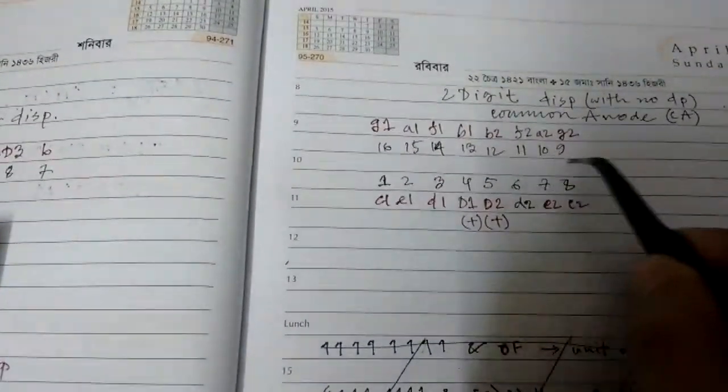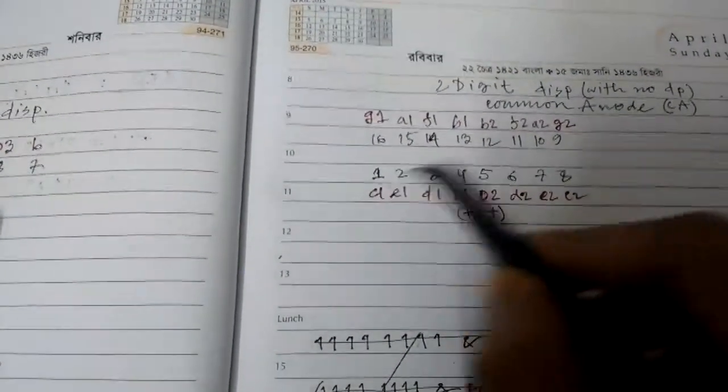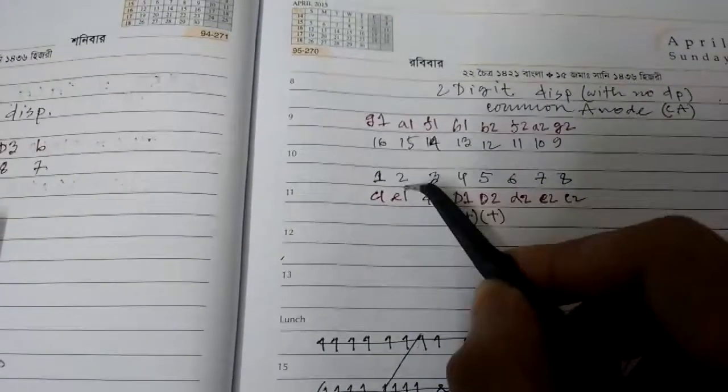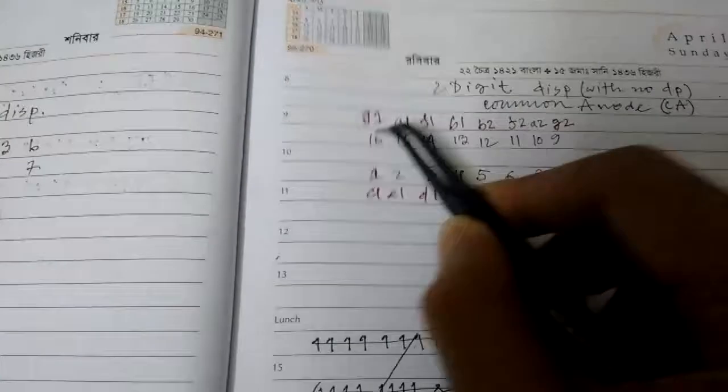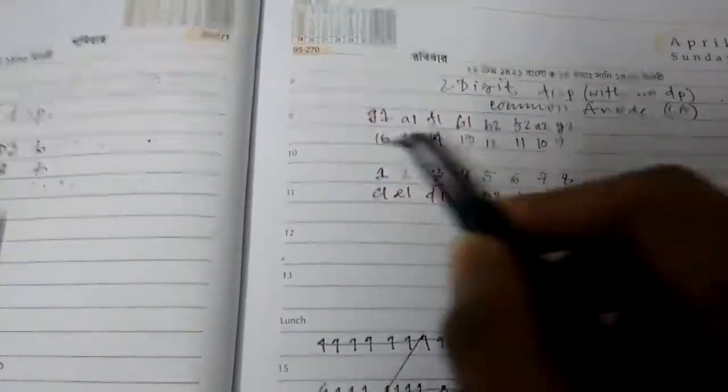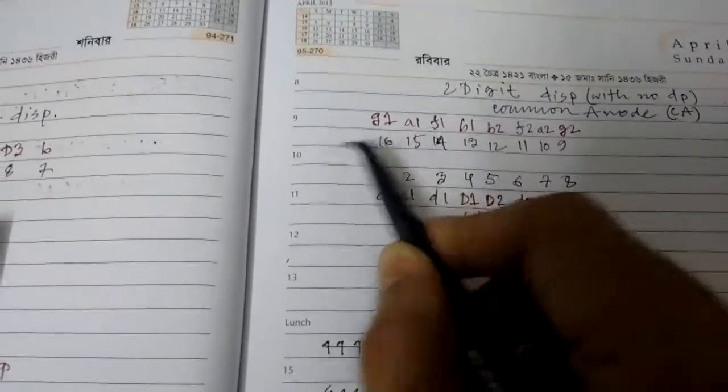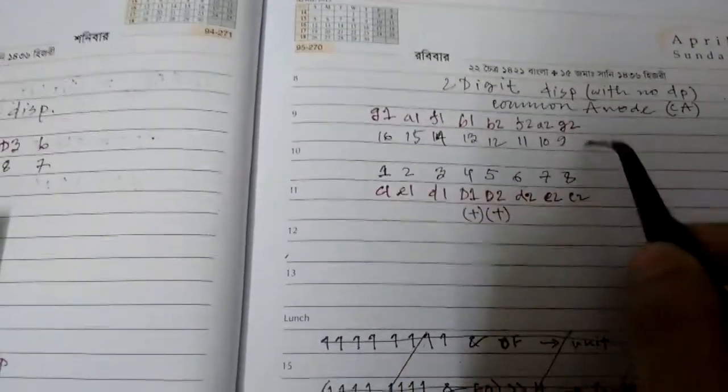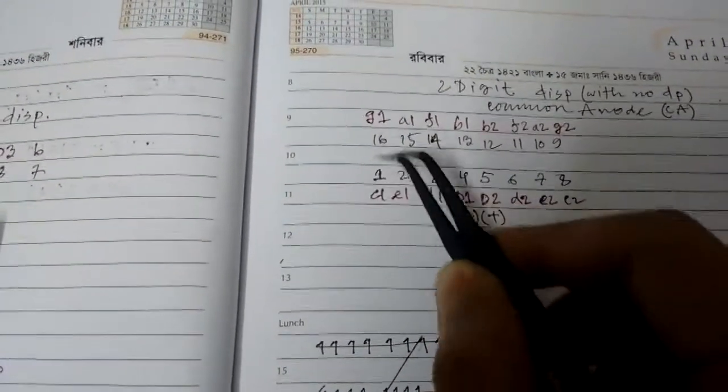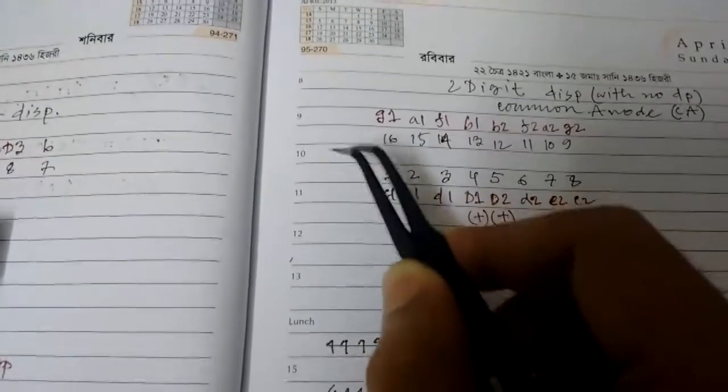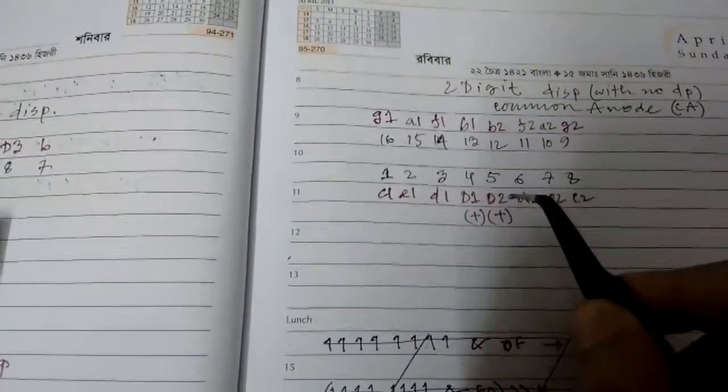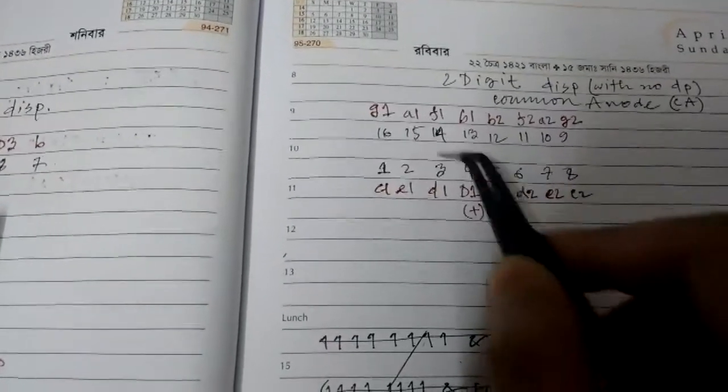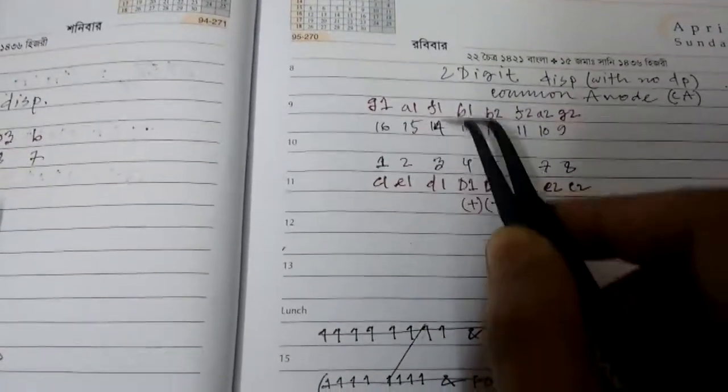So I just placed it on a breadboard and connected all the segments. C1 and C2 are connected, E1 to E2, D1 to D2, and G1 to G2, and so on. I've just commoned all the segments and brought them out, so I'm just using seven pins.